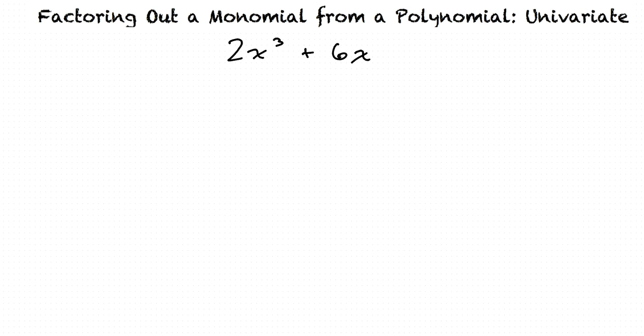Let's work out this problem. When factoring, our goal is to find the greatest common factor of each term. In this case, our first term is 2x³ and our second term is 6x. We will first check if the numerical values have any factors in common so we can factor them out.